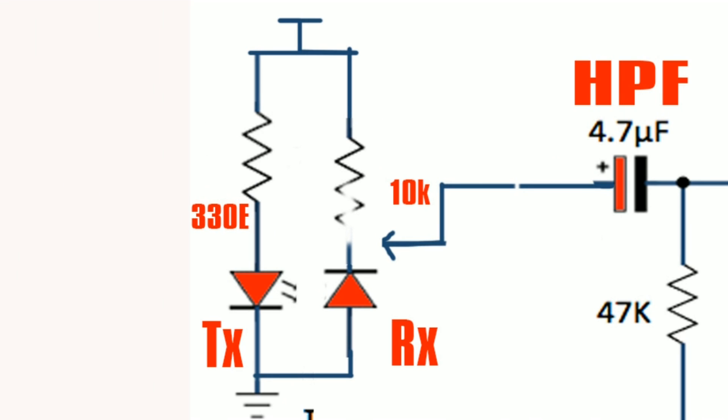First of all, connect the transmitter of the proximity sensor in forward bias, and the receiver in reverse bias.